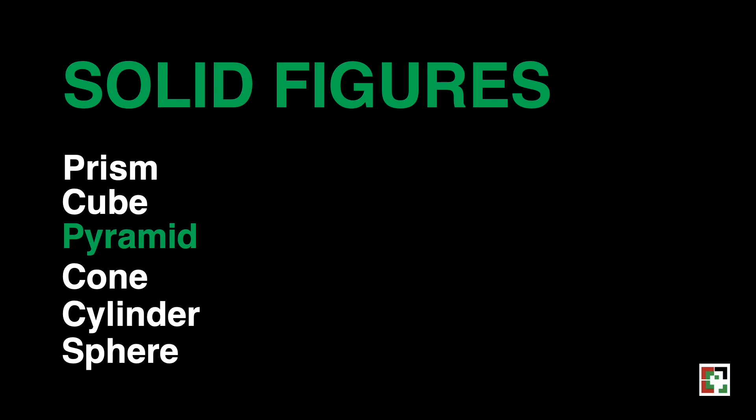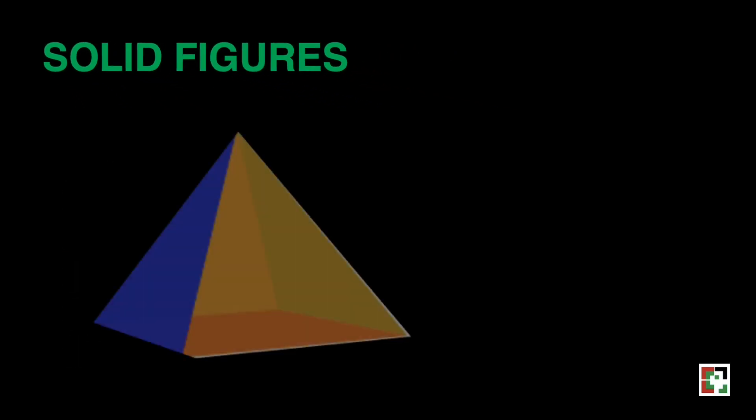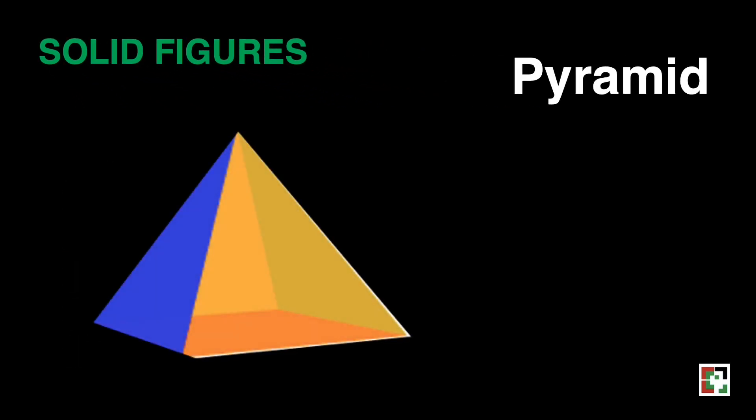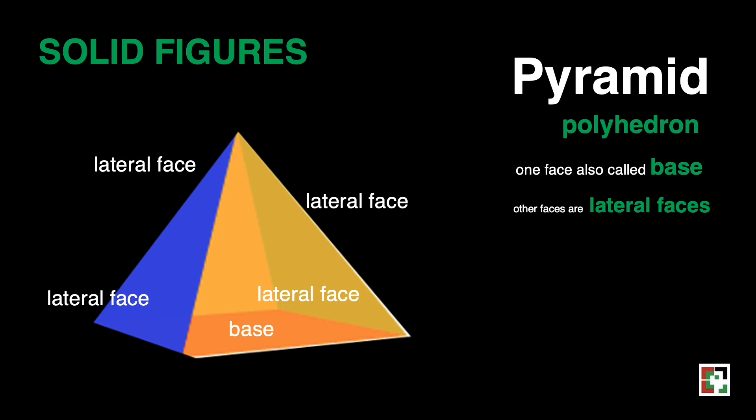Now, let's move on to the pyramid. This is a pyramid. A pyramid is a polyhedron in which one face, also called a base, can be any polygon. The other faces, also called lateral faces, or triangular sides, are triangles that meet at a common vertex.